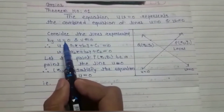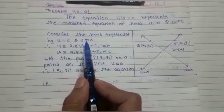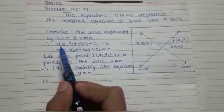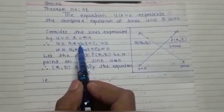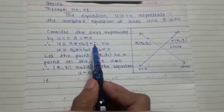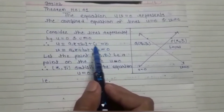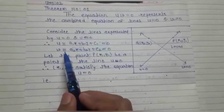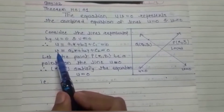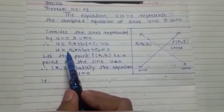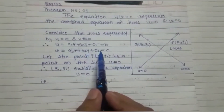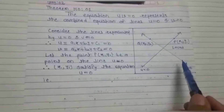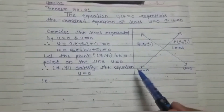We will consider the lines represented by u = 0 and v = 0. The equation for the line u = 0 is a1x + b1y + c1 = 0, as considered earlier in the definition of the combined equation of a pair of lines. Then we consider the equation of line v, which is a2x + b2y + c2 = 0.